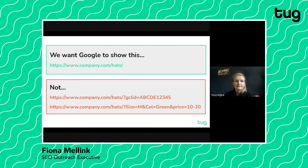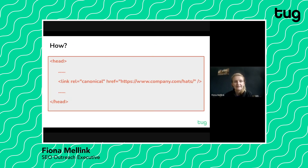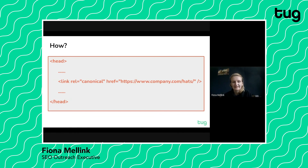And the way we solve this is quite straightforward. What we're going to do is apply a self-referential canonical tag to the hats page. In the head of the page we will add link rel="canonical", and then the crucial bit — in the href here we've got company.com/hats as the master version of the page. So what's in the href is the master version. What happens now is that any iteration of that URL will revert to company.com/hats as the master version. Anything else is auxiliary to that.